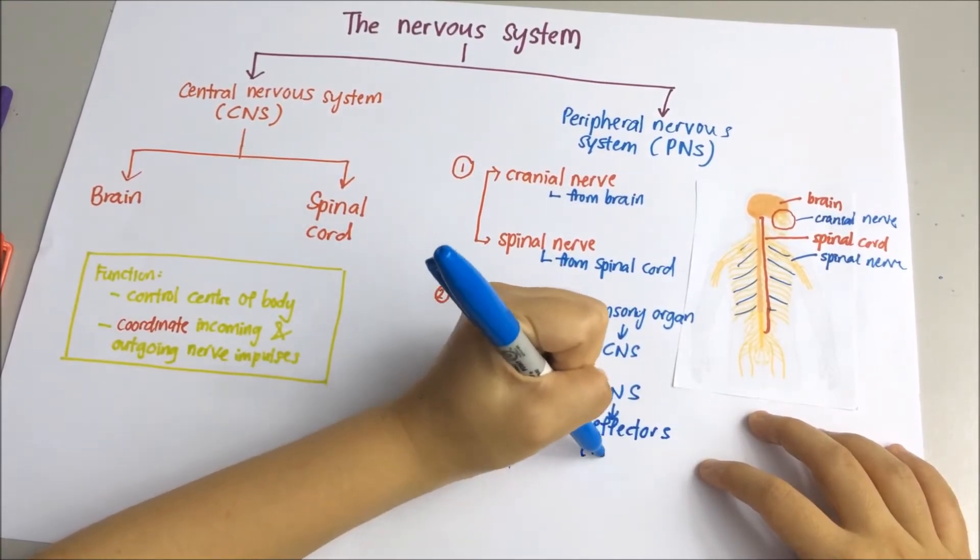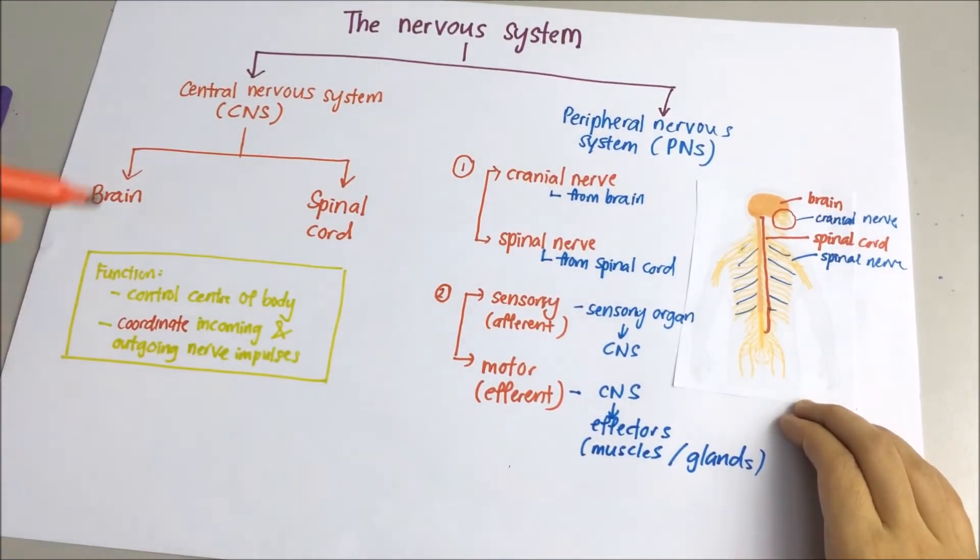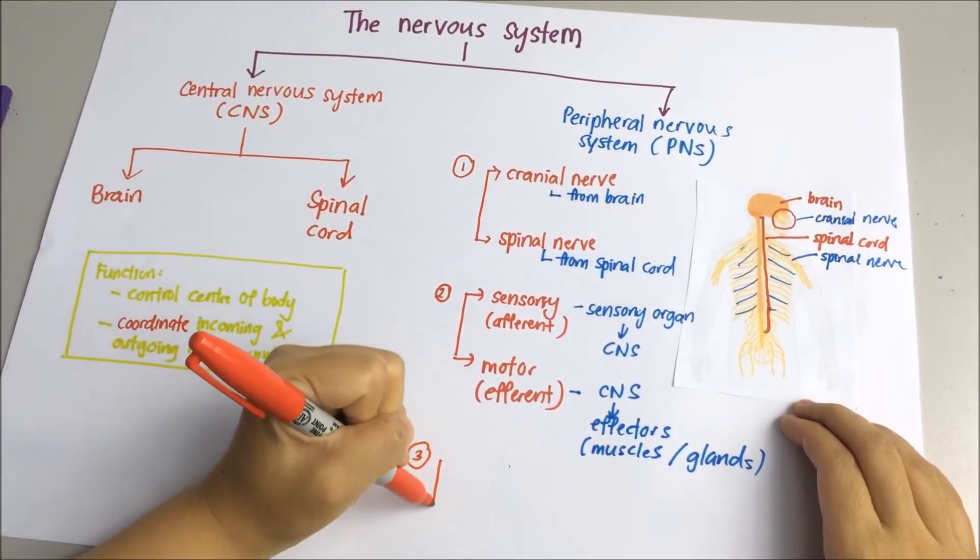Motor neuron carry the impulses from the central nervous system to the muscles or gland. They are known as effectors.